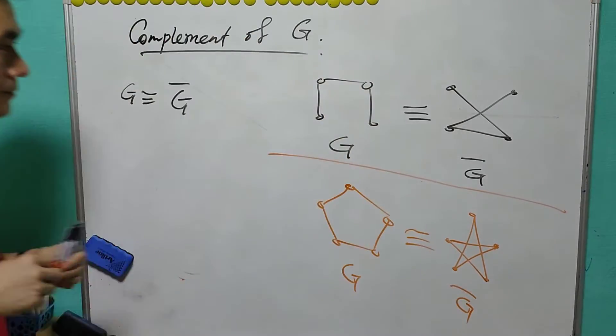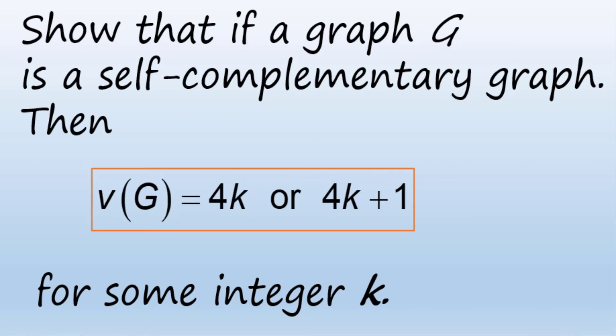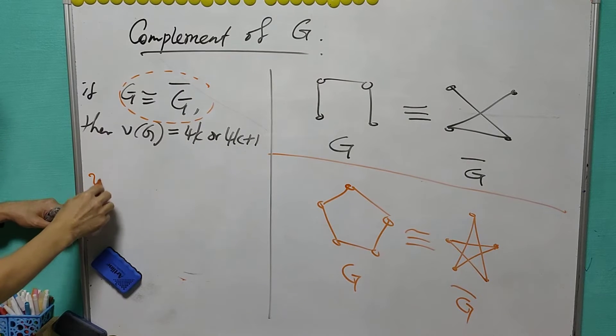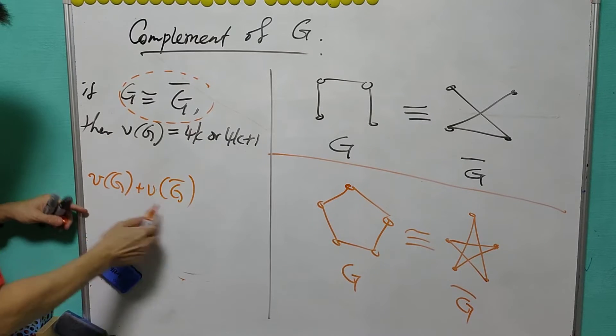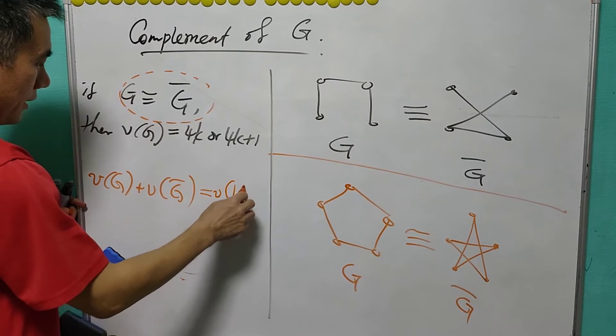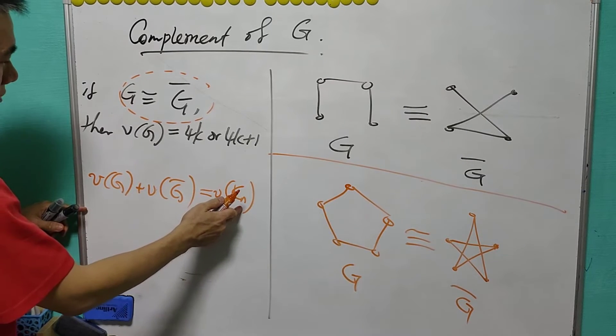We have a next result stating that if G is self-complementary, then the size of G is either 4k or 4k plus 1. This is obvious because we know in general the size of G plus the size of G bar equals to the size of KN, if N is the size of G.